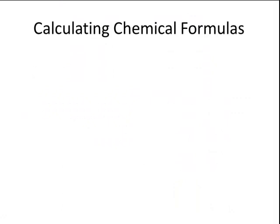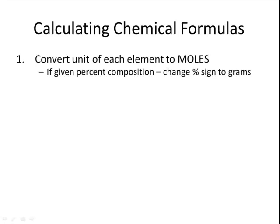When calculating empirical formulas and molecular formulas, there is a simple set of steps to follow. The first thing we need to do is convert the unit given into moles. Usually grams will be given, and we can simply change that from grams to moles. Sometimes a percent composition will be given, and you can just take the percent sign and change it to grams, then convert the grams to moles.